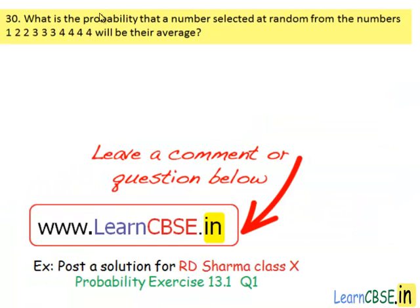Thirtieth question: What is the probability that a number selected at random from the numbers 1, 2, 2, 3, 3, 3, 4, 4, 4 will be their average?